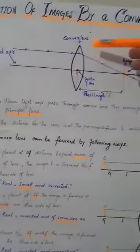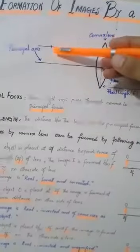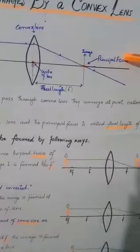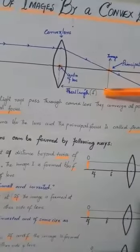Hopefully you understand what is a convex lens, what is the principal axis, what is the principal focus, and what is the focal length of the lens.